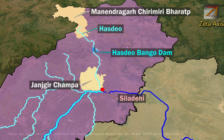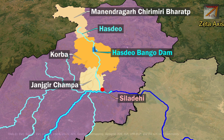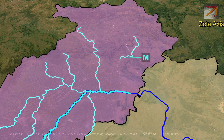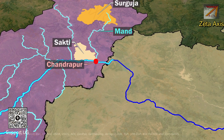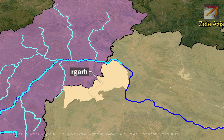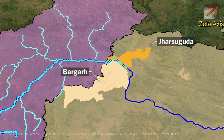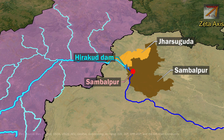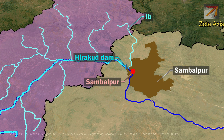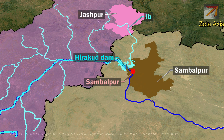Hasdiyo Bango Dam is constructed on Hasdiyo river in Korba district. After the confluence of Hasdiyo, Mahanadi river flows east and meets Mahan river in Chandpur of Shakti district in Chhattisgarh, just before the Odisha border. Mahan river originates from Surguja district of Chhattisgarh. After the confluence of Mahan river, Mahanadi river enters Odisha, forming the border of Bargar and Jarsukuda districts. The river flows through Sambalpur district, where Hirakund Dam is built just upstream of Sambalpur city. Hirakund Dam is the world's longest earthen dam and forms India's largest water reservoir. Within the reservoir, just before Hirakund Dam, Ib river joins Mahanadi river. The Ib river originates in Jhaspur district of Chhattisgarh and meets Mahanadi within the Hirakund reservoir.